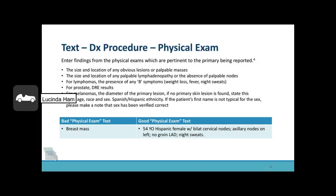Let's look at text in regard to diagnostic procedures and the physical exam. Enter the findings from physical exams pertinent to the primary being reported, such as the size and location of any obvious lesions or palpable masses, the size and location of any palpable lymphadenopathy or the absence of palpable nodes. For lymphomas, the presence of any B symptoms such as weight loss, fever, or night sweats. For the prostate, enter digital rectal exam results. For melanomas, enter the diameter of the primary lesion and if no primary skin lesion is found, please state that. State the patient's age, race, and sex, and Spanish or Hispanic ethnicity. If the patient's first name is not typical for the sex, please note that sex has been verified as correct. The bad text only has breast mass documented, while the good text goes into quite a bit more detail.